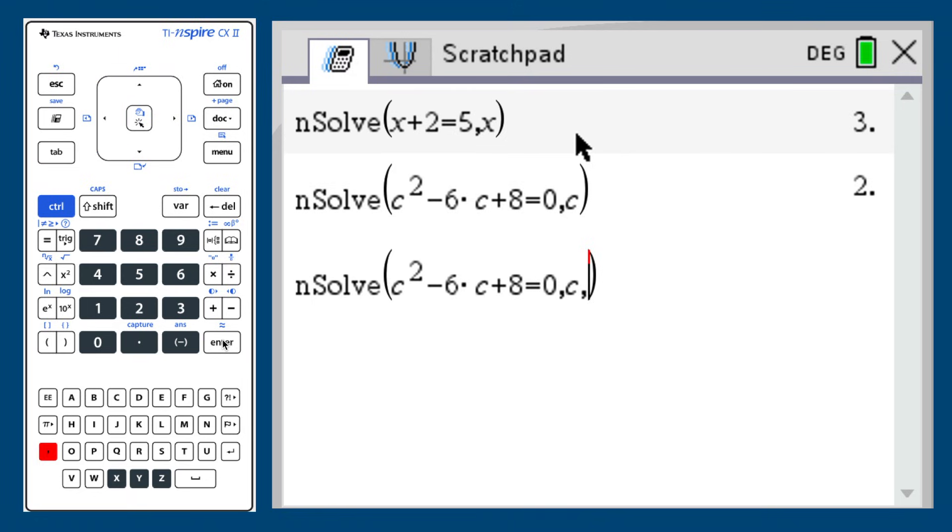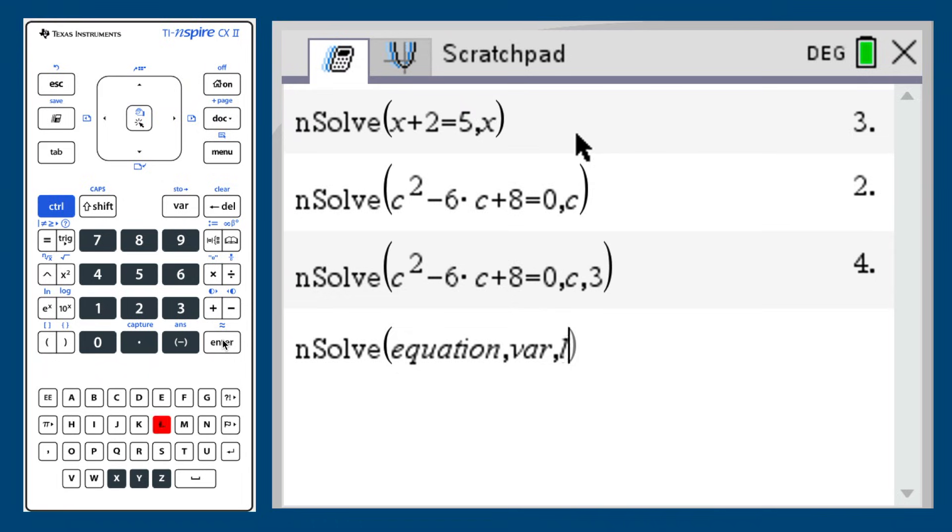To do this, simply add a comma after the variable and enter the lower bound. Finally, if you wanted an upper bound, you would enter that once again followed by a comma after the lower bound. Thank you for watching.